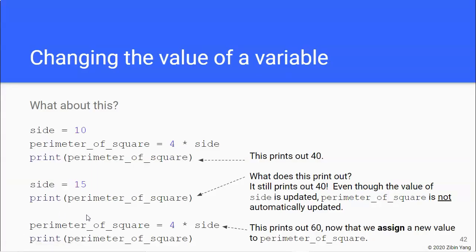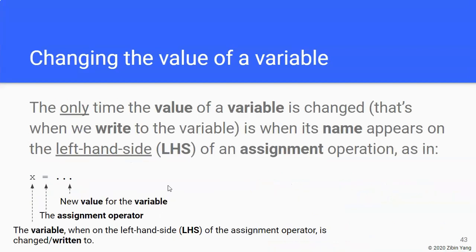And that's what this slide is saying, that the only way that the value of perimeter_of_square is updated is when we explicitly assign using the assignment operator a new value. So this is actually something that is very, very important to recognize in Python and most other programming languages: that the only time the value of a variable is updated or is changed...